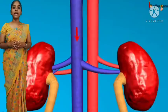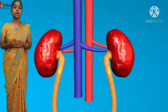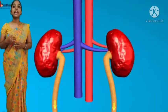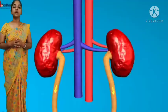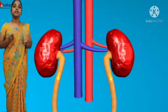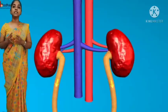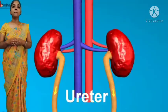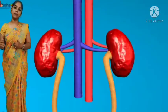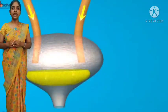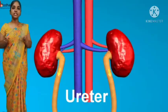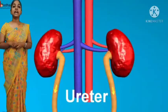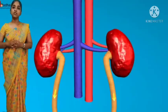The kidneys are a pair of bean-shaped organs. They help filter the blood and remove harmful waste from the body, forming urine. The ureter are a pair of tubes joining the kidneys to the urinary bladder. They collect the urine from the kidney and transport it to the urinary bladder.